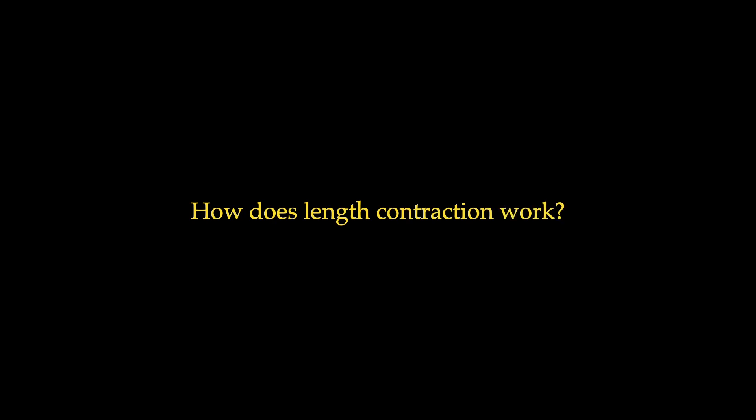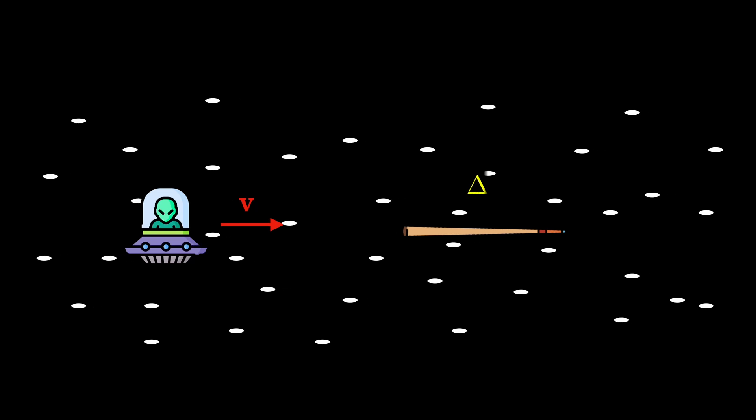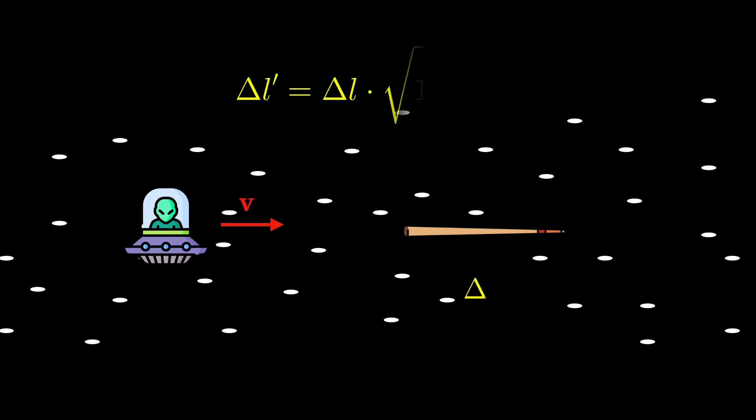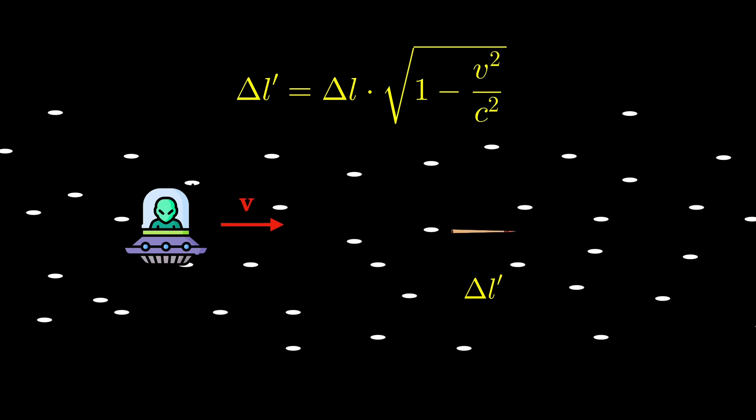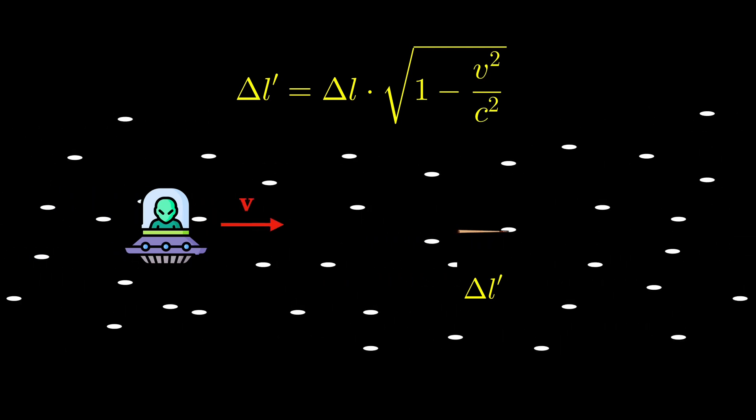Let's forget about the incline for a moment. The rod has length delta l and the alien ship flies towards it at speed v. Delta l changes to delta l prime and this is dependent on the speed of the alien ship.